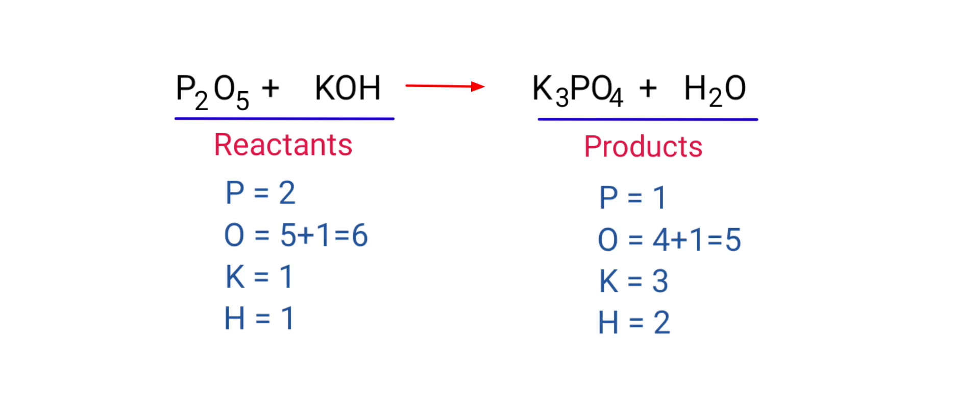The number of atoms are not balanced on both sides. To balance the chemical equation we need to make use of coefficients. A coefficient is a number that we place in front of a chemical formula.